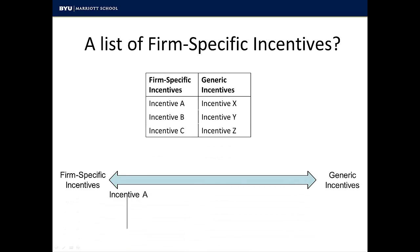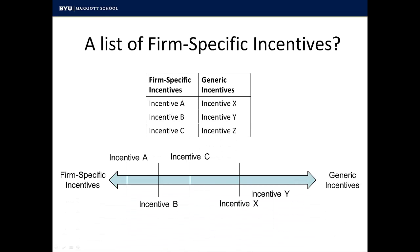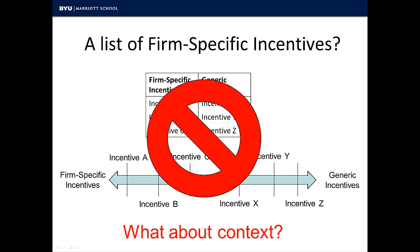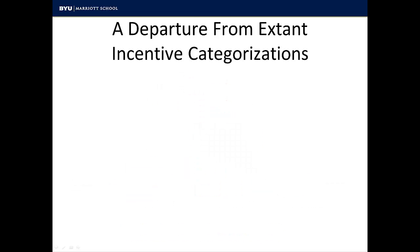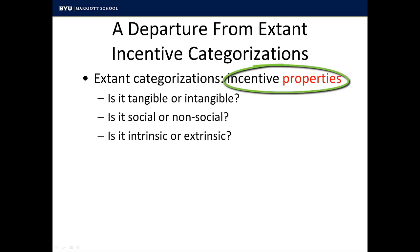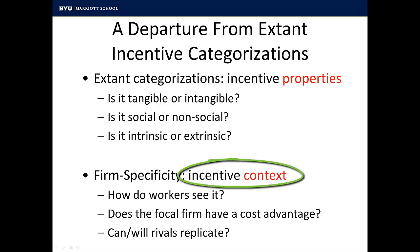Now at this point, most people would like me to provide a list of highly firm-specific incentives, or to place incentives that we know about on the firm specificity continuum. The problem with doing this is that firm specificity is determined by the context in which any incentive is embedded, rather than by the properties of the incentive itself. This presents a key departure from extant organizational literature, which focuses more on the properties of the actual incentive than on the context in which the incentive is embedded.